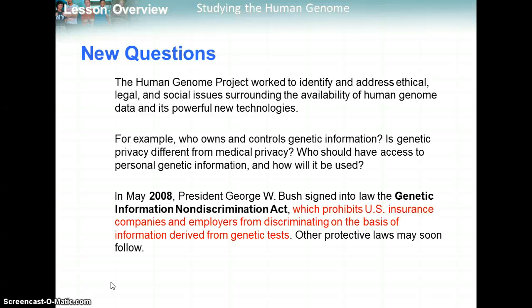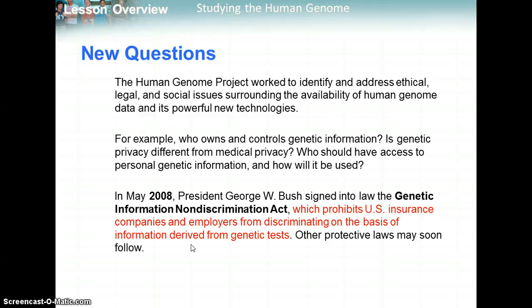New questions came up about whether insurance companies could use genetic information against us. In 2008, the Genetic Information Non-Discrimination Act was signed, and it prohibits U.S. insurance companies and employers from discriminating on the basis of information derived from genetic tests. So if you tested positive for the breast cancer gene, an insurance company cannot deny you coverage because of that.